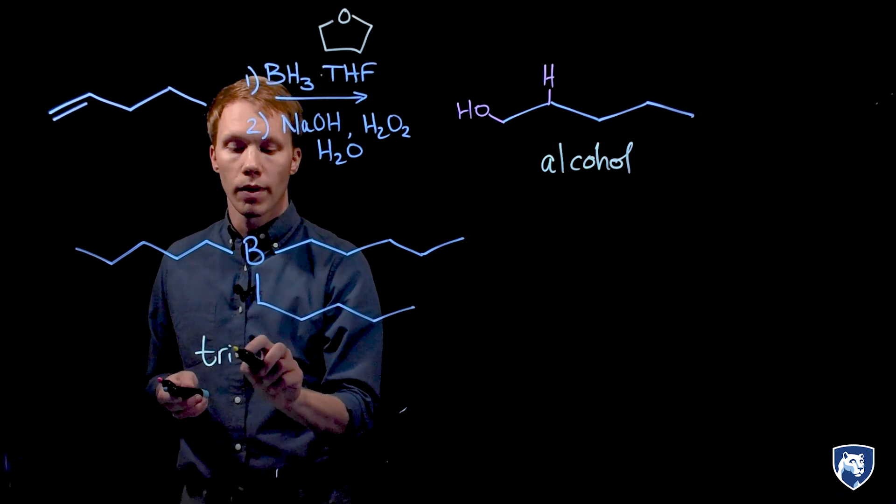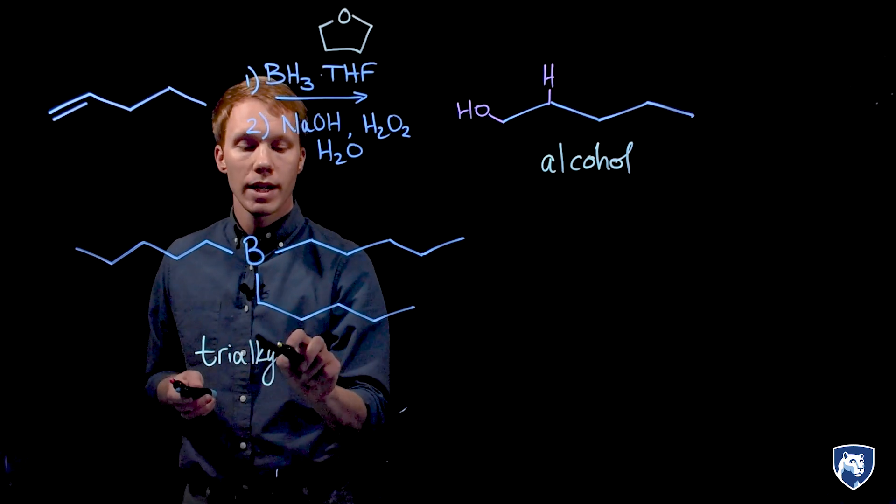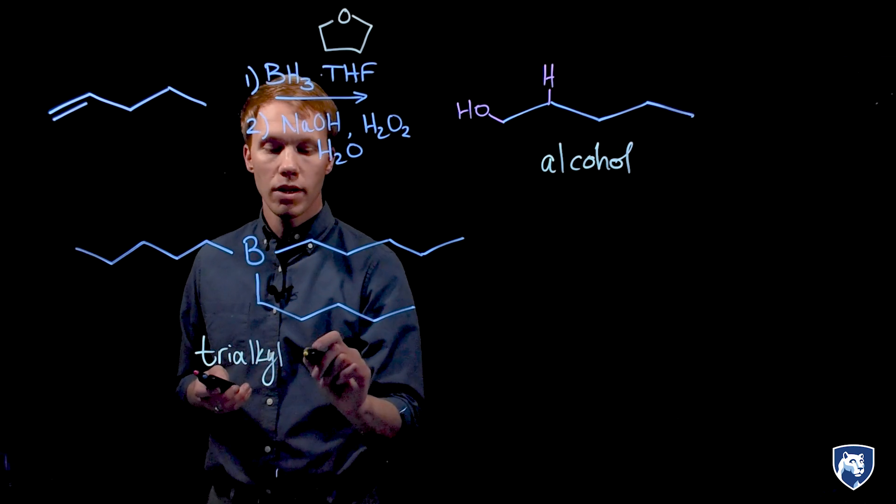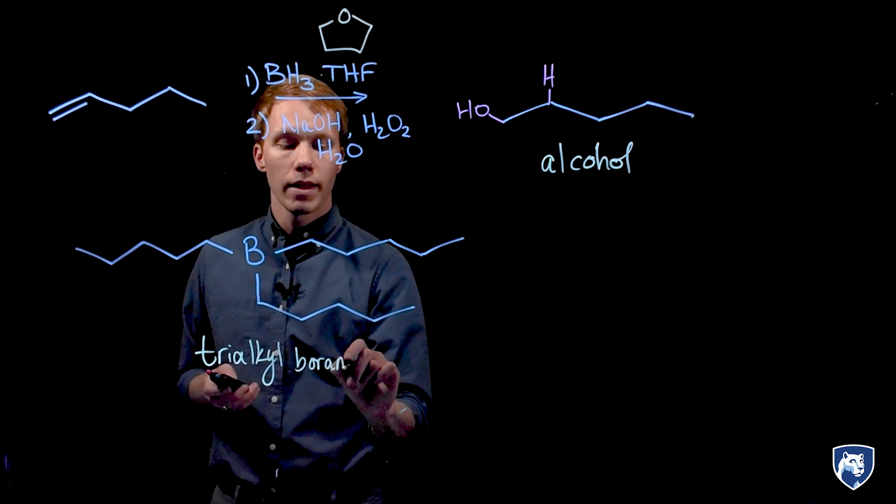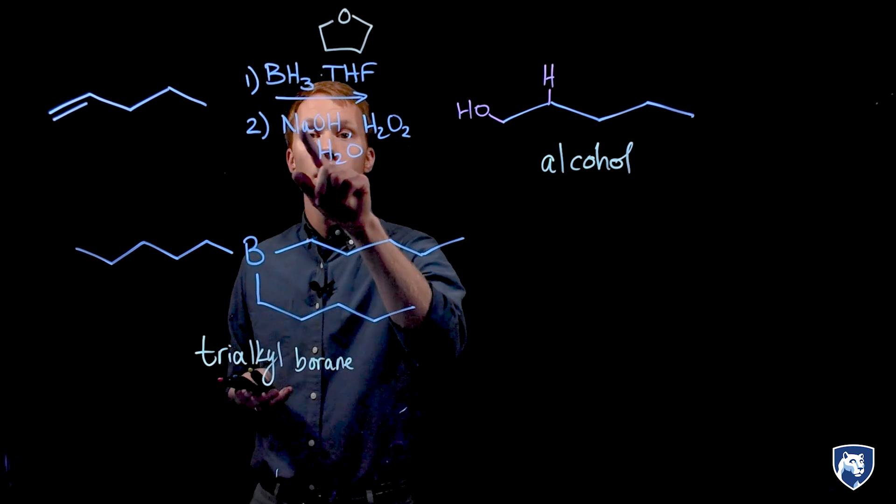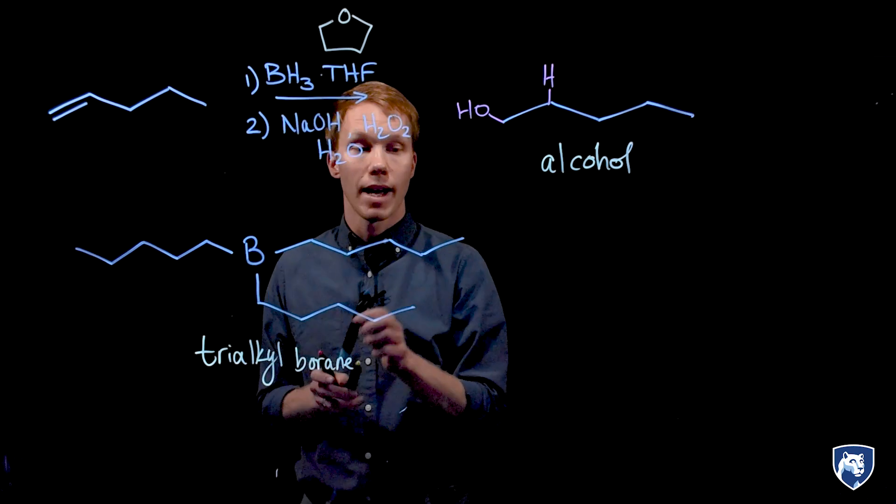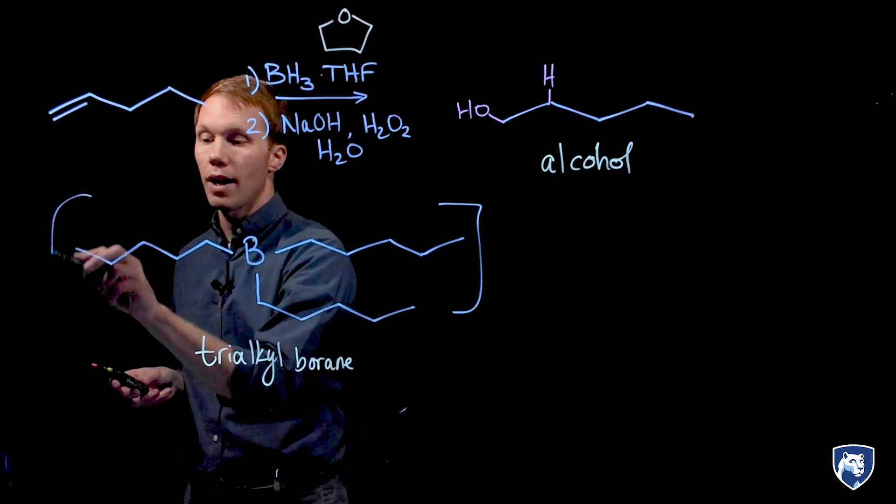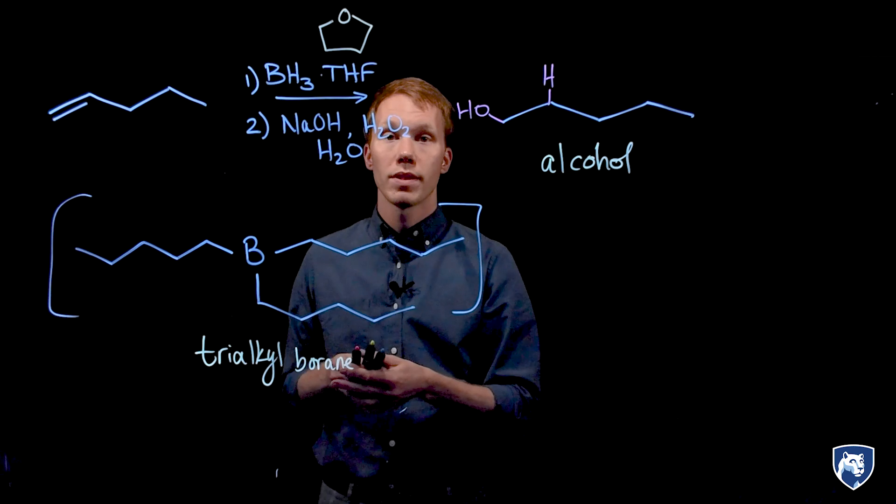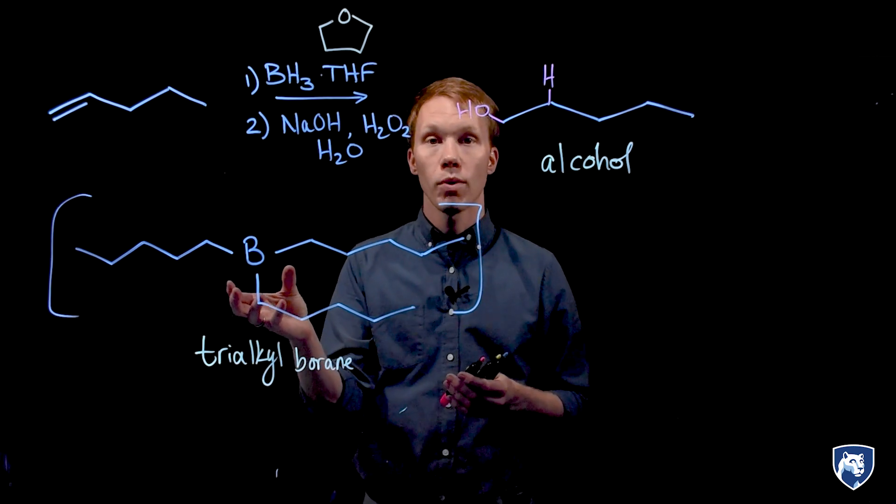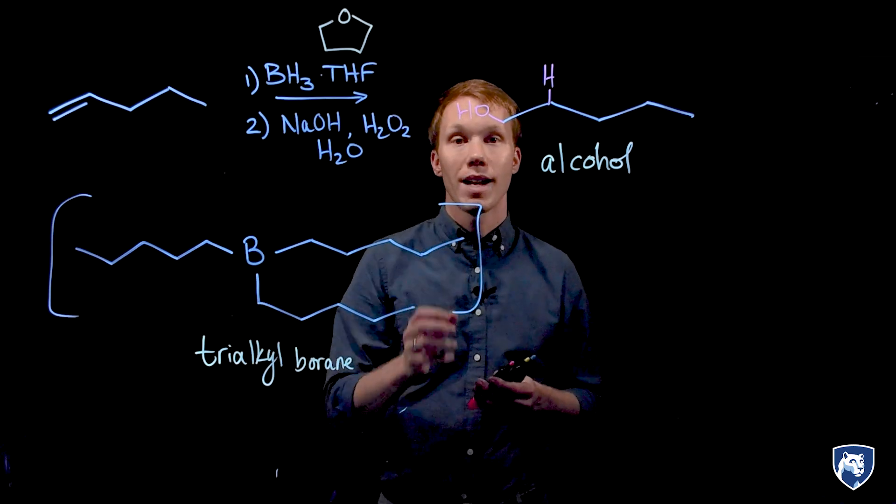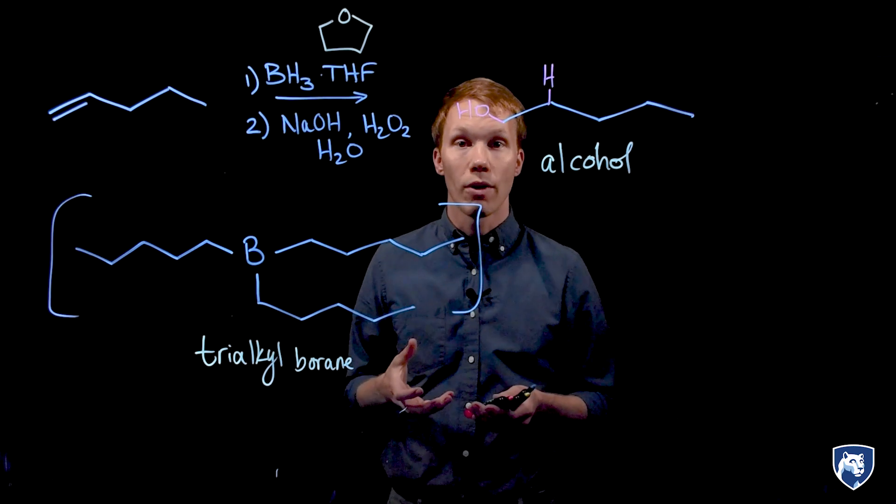This trialkyl borane is treated without isolation with water, sodium hydroxide, and hydrogen peroxide to produce our alcohol. So step one, we produce the trialkyl borane. Step two oxidizes that trialkyl borane to an alcohol.